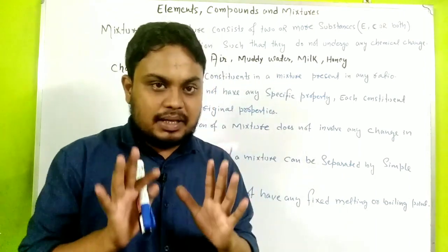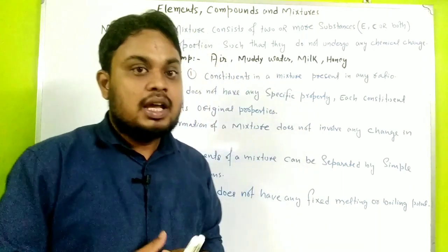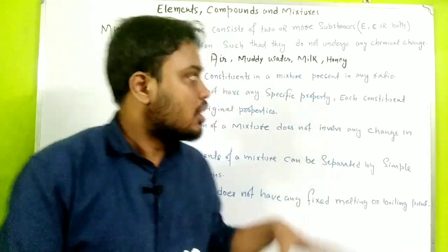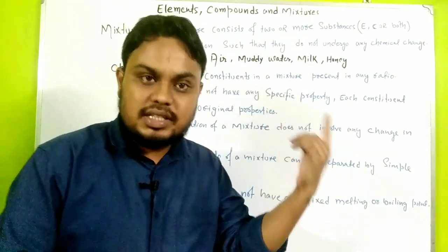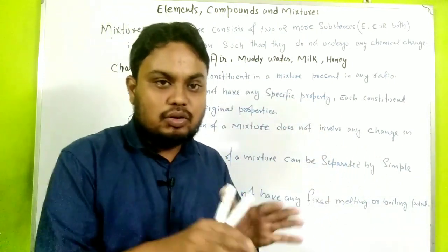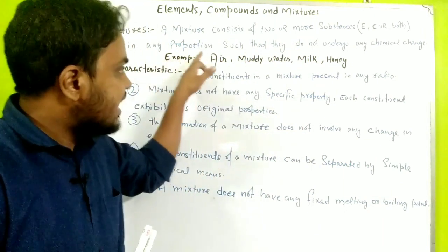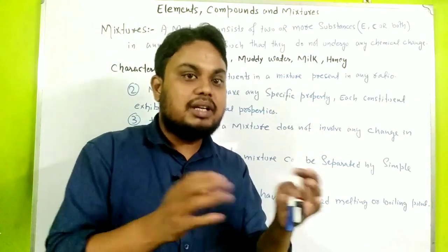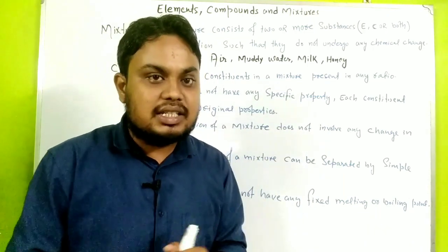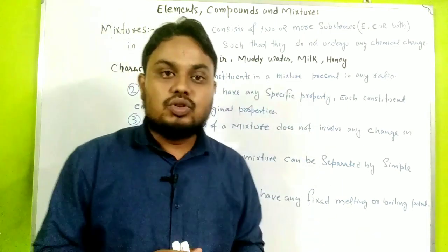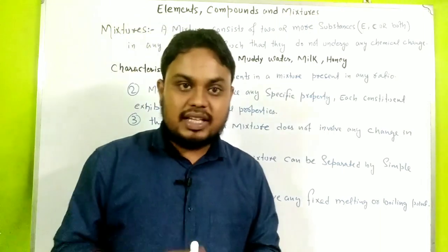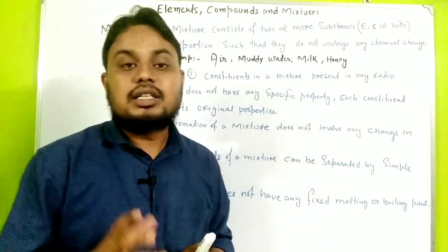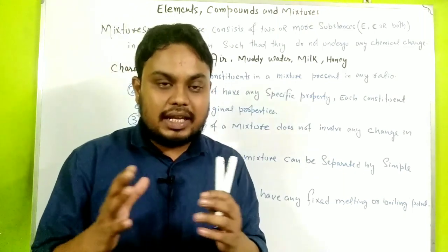Now, the characteristics of a mixture: a mixture consists of two or more substances combined in any ratio, without any chemical changes. For example, air — which contains nitrogen, oxygen, carbon dioxide — is not in a fixed ratio. The compositions can vary, and since they combine in any ratio without chemical change, air is a mixture.